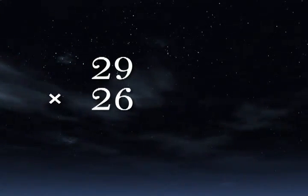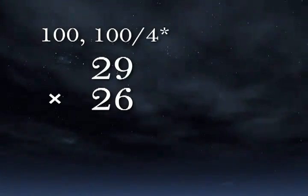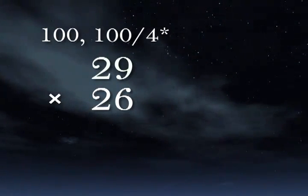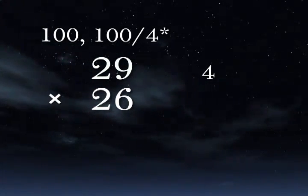Here's another one. Let's use actual base 100 and working base 100 divided by 4, which we know to be 25. 29 is 4 more than 25, so we write 4. 26 is 1 more, so we write 1.